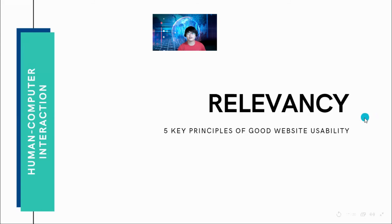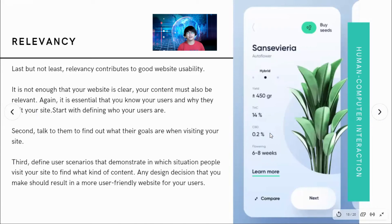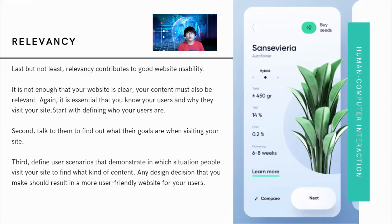The fifth and final principle is relevancy — the last but not least. Relevancy contributes to good website usability. It is not enough that your website is clear; your content must also be relevant. It is essential that you know your users and why they visit your site. Start by defining who your users are. Talk to them to find out what their goals are when visiting your site. Define user scenarios that demonstrate in which situations people visit your site and what kind of content they seek. Any design decisions you make should result in a more user-friendly website for your users.